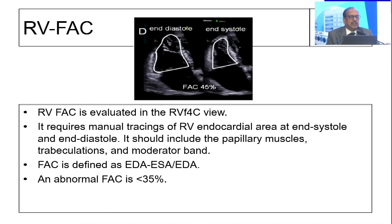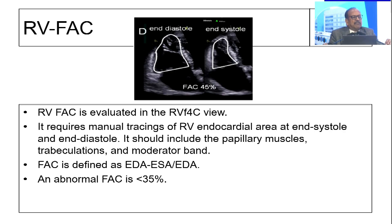The third important parameter is fractional area change. This has been done for the left side for a long time as ejection fraction. But since RV is a crescent-shaped structure, we don't look at ejection fraction — we look at fractional area change of the RV. Just trace the area in end-diastole versus area in end-systole, and you get a value. Anything more than 35% is considered normal; less than that is abnormal.